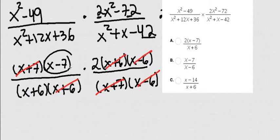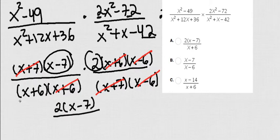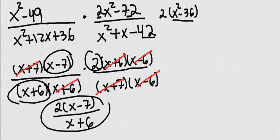So my final answer is going to be this one times this one. So 2 times x minus 7 over whatever I have left, which is x plus 6. Voila!